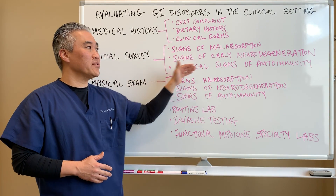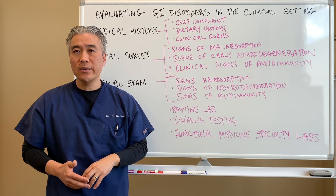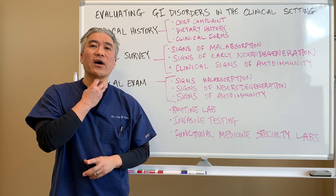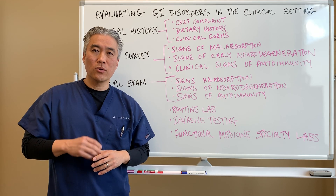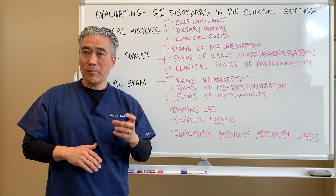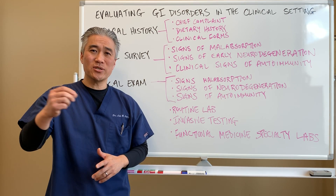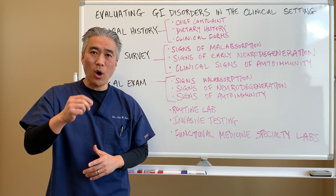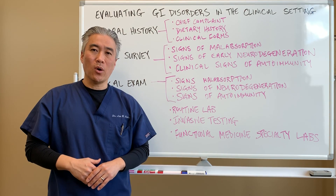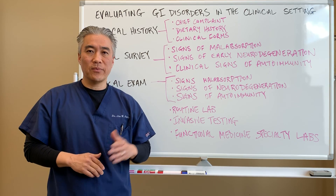We look at history of autoimmunity — do they have rheumatoid arthritis or hypothyroid? Does their thyroid look puffy or slightly swollen? You have to ask those questions and clinically observe what is going on with that patient.